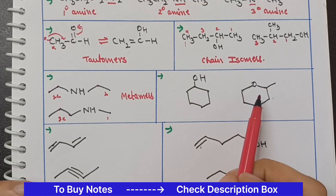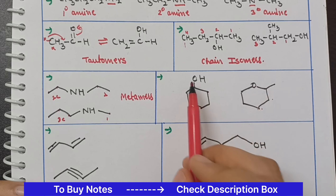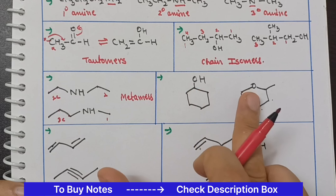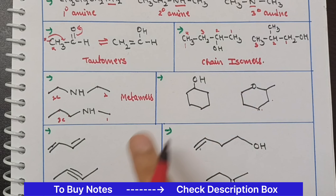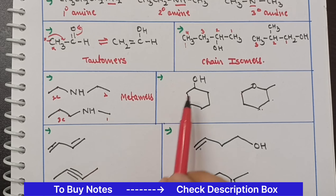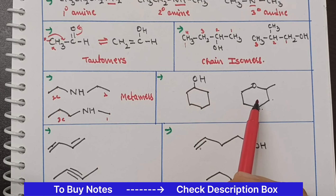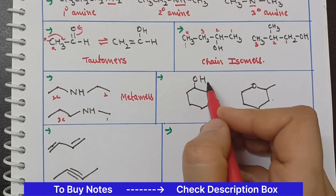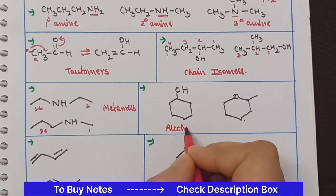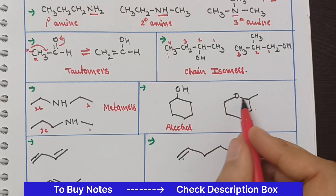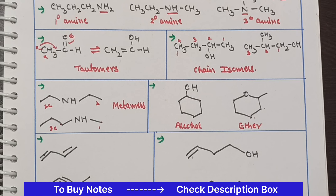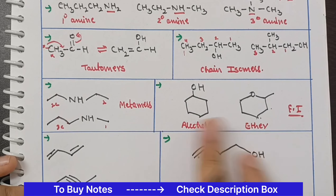In the next question, both molecular formulas are the same — 6 carbons, 1 oxygen, same number of hydrogens. Here the functional group is OH (alcohol) and here the functional group is ether (R-O-R). Since the functional groups are different, this will be called functional isomers.